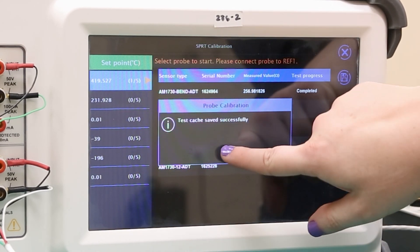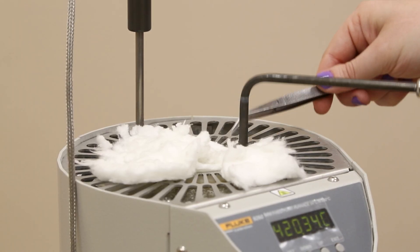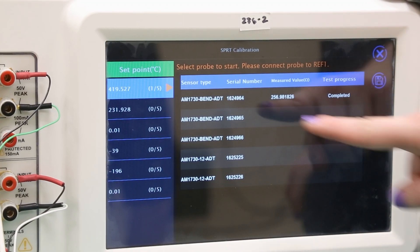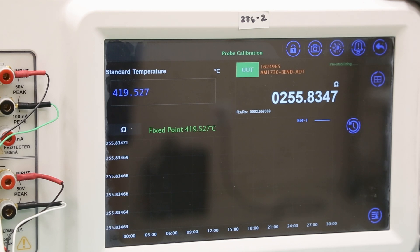Since we are calibrating the same probe types, we can swap between them using the quick connector. Now we will move the new probe to the active position on the zinc cell. Return to the 286 and select the second probe to begin measurement. These steps can be repeated for the rest of the probes.